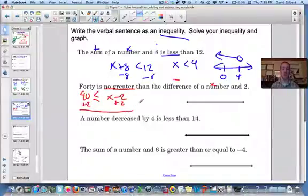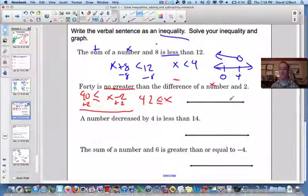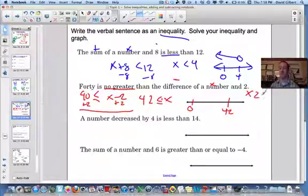Solve that, and we got 42 is less than or equal to x. 42, zeros over here, x is greater than or equal to 42. I like to write it like this, greater than or equal to. So open a closed circle, point to the right.